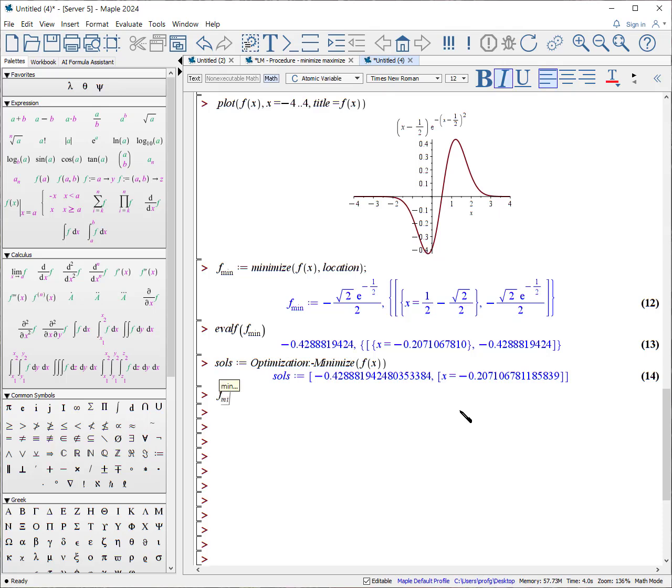To extract out those values, f_min colon equals solutions number one, that's the element of the first one, and the location x_min colon equals solutions, it's in the second group, and we have to evaluate for x in that second group, or you can look for the right-hand side of the second group.